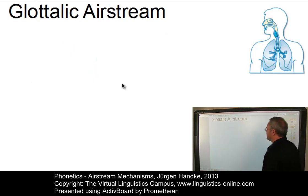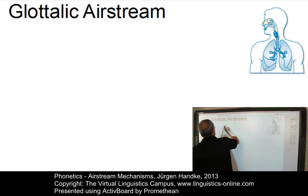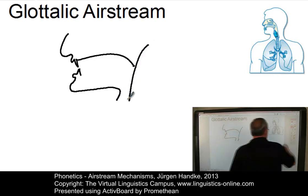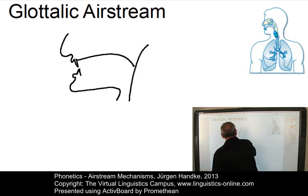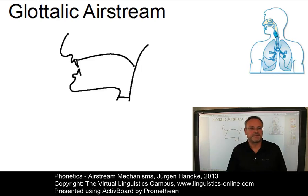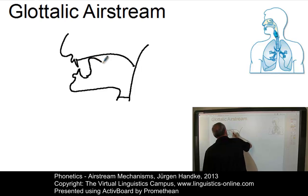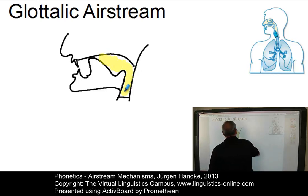Let's look at the glottalic airstream next. In order to demonstrate how this airstream works, let's first draw a sort of vocal tract. In order to produce a glottalic airstream, we need two closures. One closure occurs in the glottis — so we close off the airstream there. At the same time, a closure is produced somewhere in the vocal tract. This is the air that will be used in the glottalic airstream.